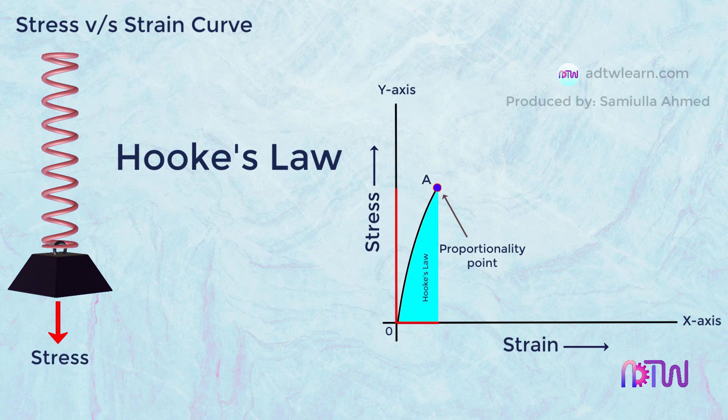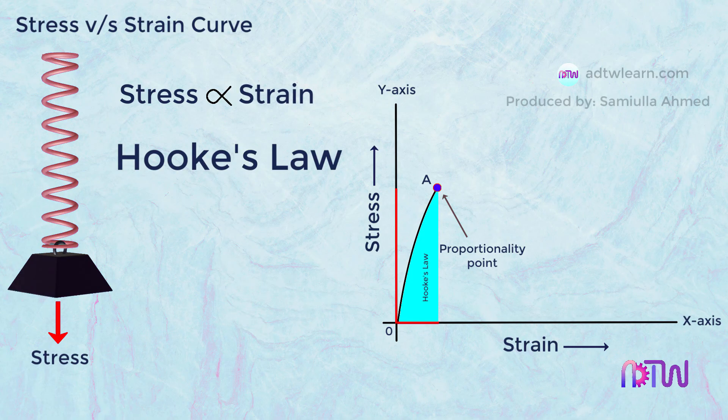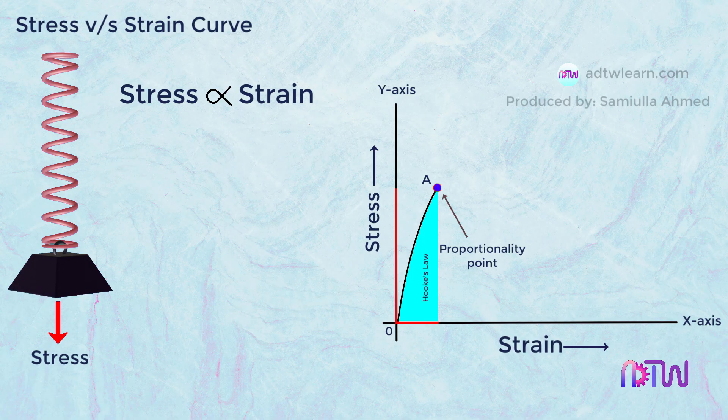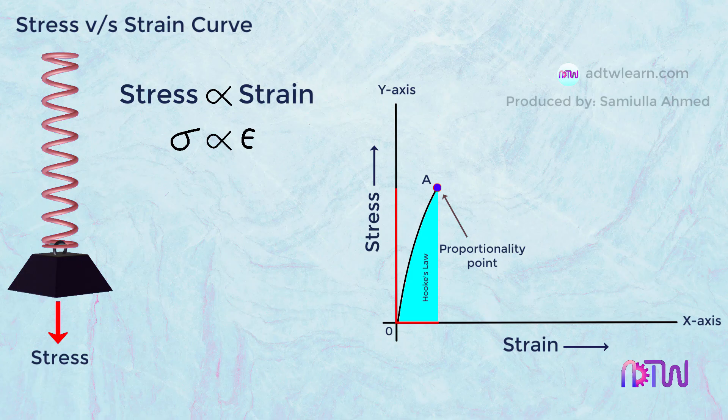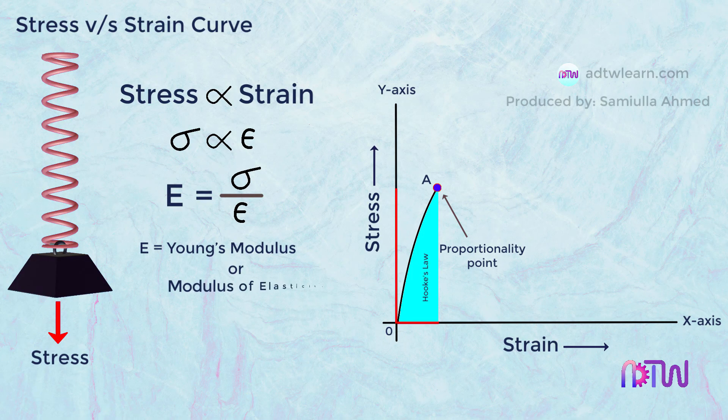That is, the stress applied on the body is directly proportional to the strain undergone by the body. Here, stress is proportional to strain. Stress is represented by sigma, and strain by epsilon. And the proportionality constant here is capital E. Capital E is Young's modulus or modulus of elasticity, and its unit is Newton per millimeter square.